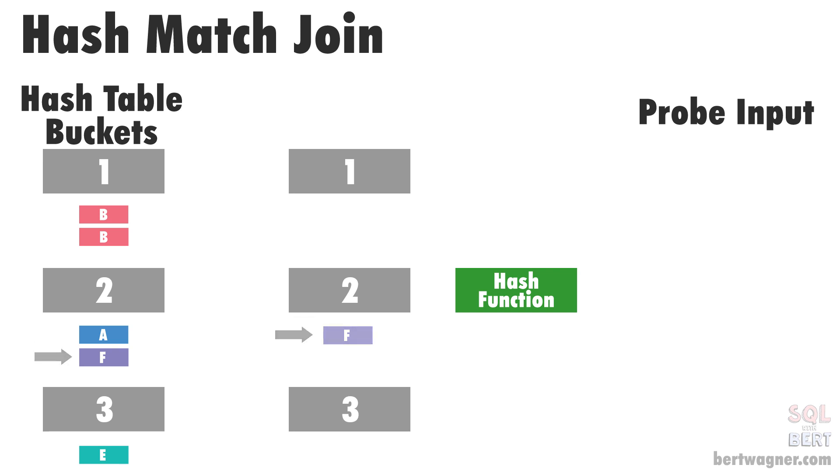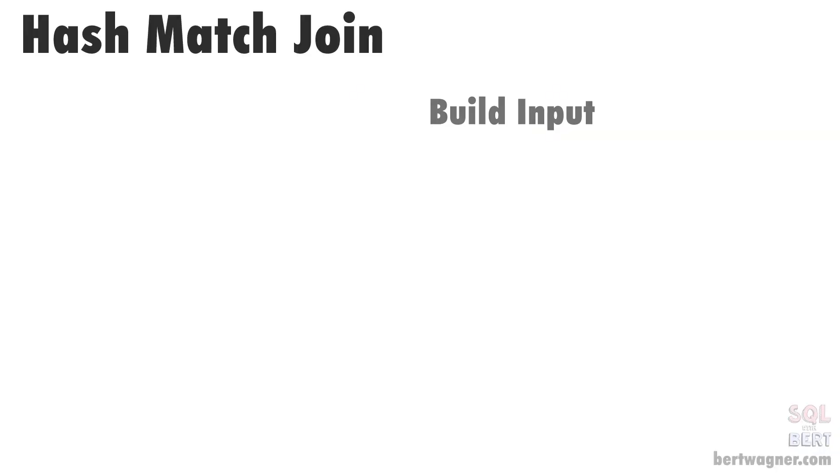A hash match join isn't necessarily the fastest type of join for all types of data, because it has to run a hash function using CPU cycles to calculate the hashes of the join keys. But the thing that makes a hash match really special is that it can use tempDB to join really large data sets.